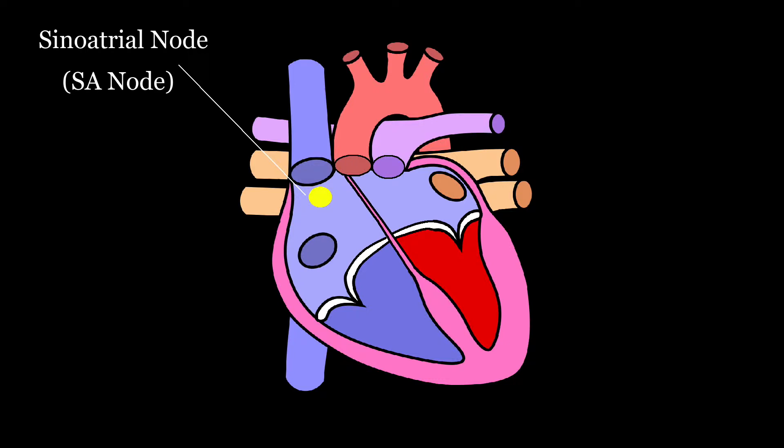This initial electrical impulse causes the atria to contract and push blood into the ventricles. From the SA node, the impulse is carried to the atrioventricular node or AV node.